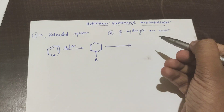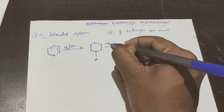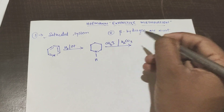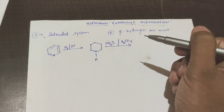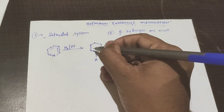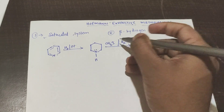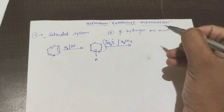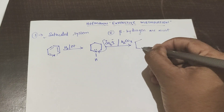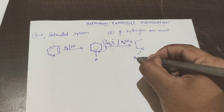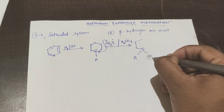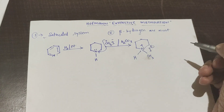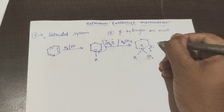Next step is methylation. We do methylation in the presence of CH3I and any base — you can use K2CO3 or Na2CO3, any mild base. Now remember there is a lone pair of electrons on the nitrogen. CH3 carries a positive charge and I carries a negative charge, so CH3 comes towards the nitrogen. What we get is a quaternary ammonium salt, with CH3 attached to nitrogen giving a positive charge and I minus as the counter ion.